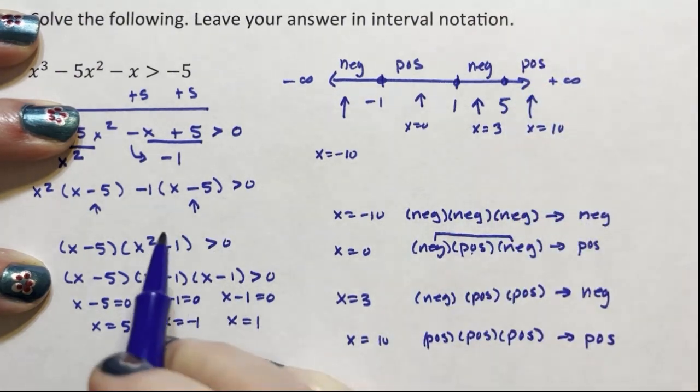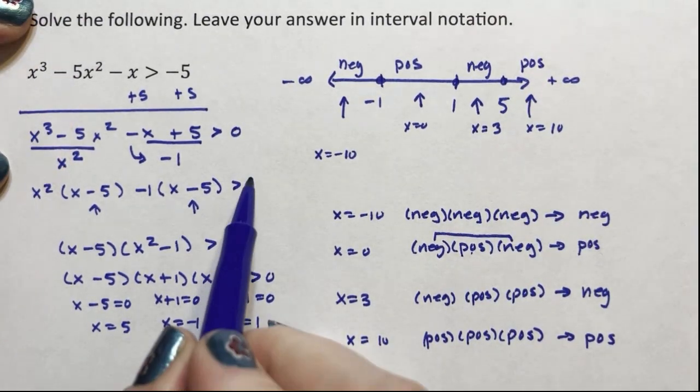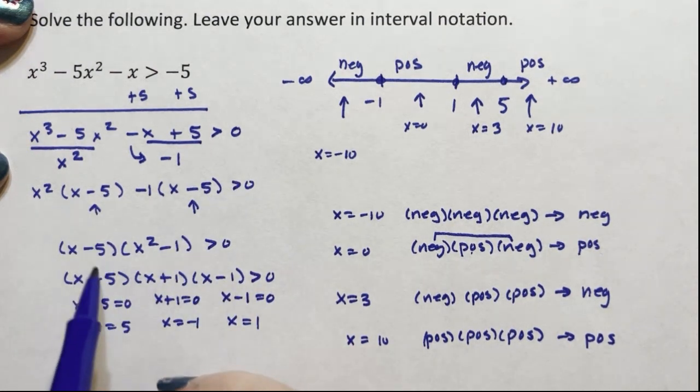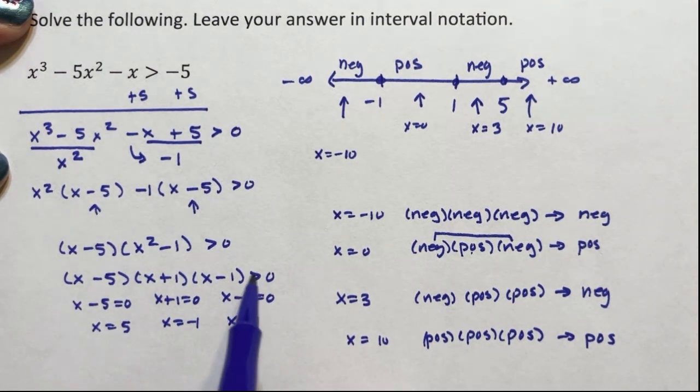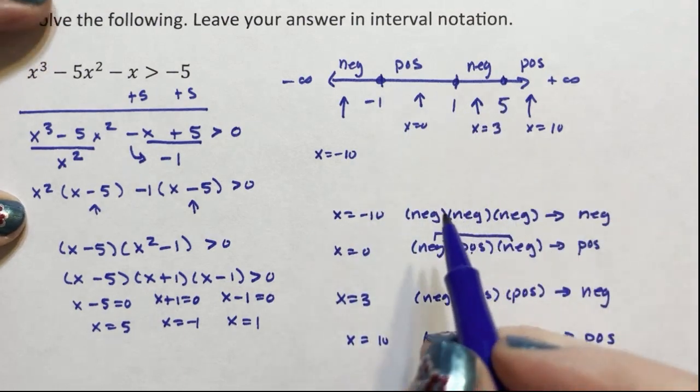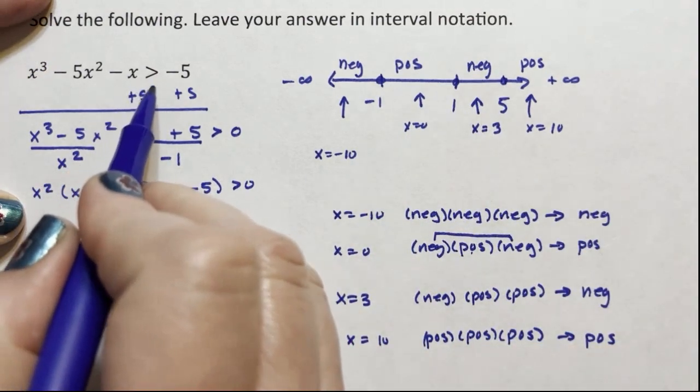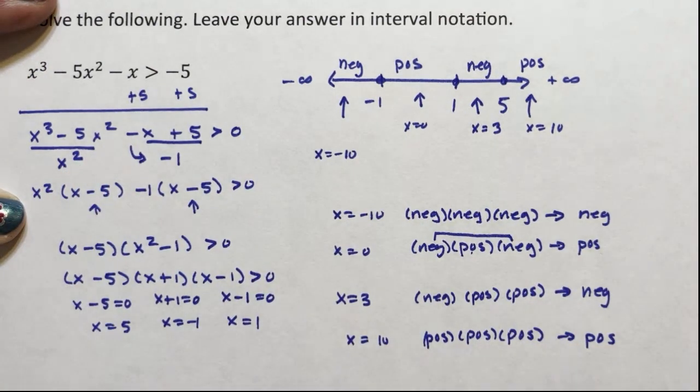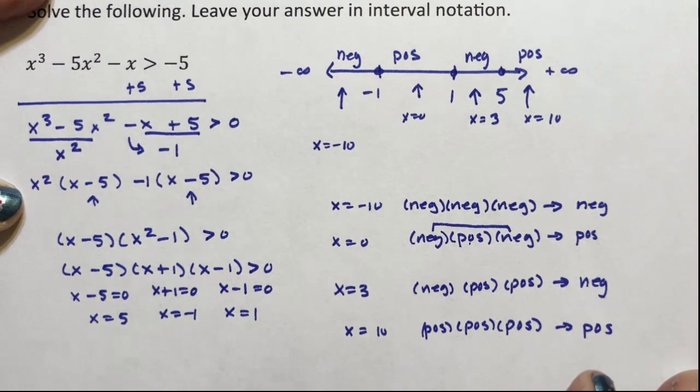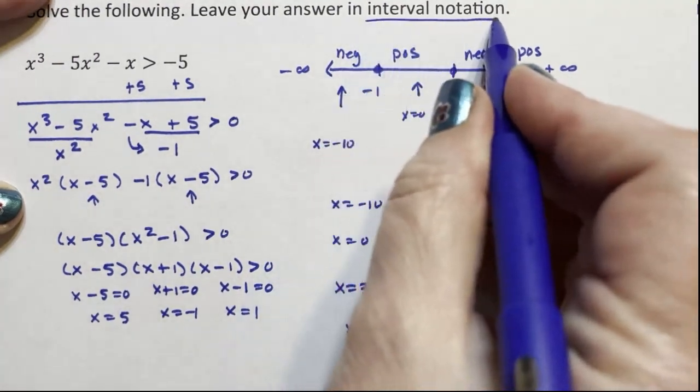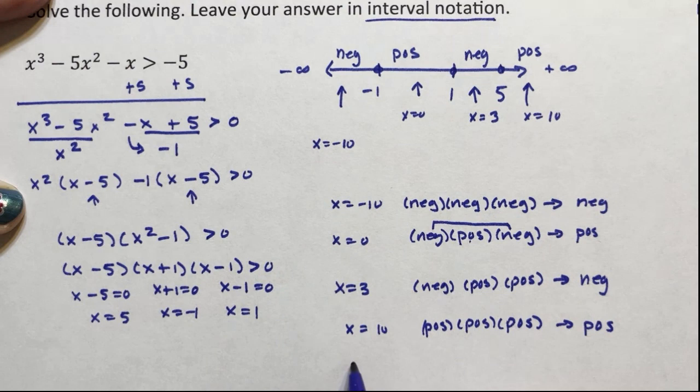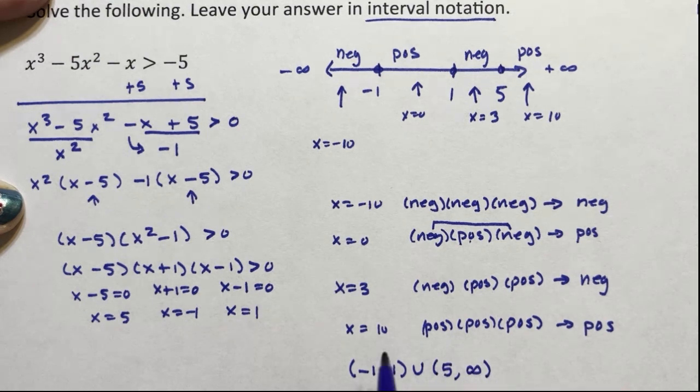And we are looking for positives. We're looking for something that is greater than 0. So the positives, and we don't have an equal sign, so all of our answers are going to be with parentheses if we want interval notation, which is what we were asked for right here. So we are going to do negative 1 to 1 joined with 5 to positive infinity. And there is our answer.